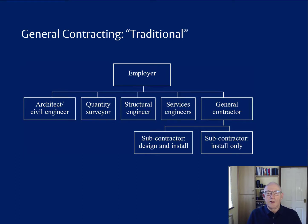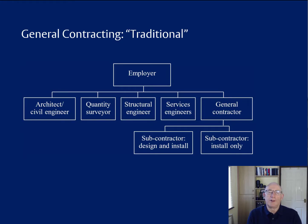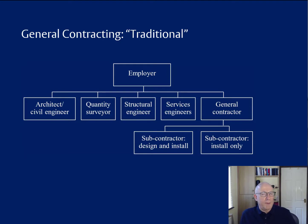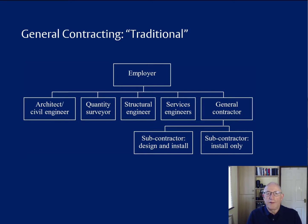An ambitious contractor called Thomas Cubitt in 1830 decided to make an offer: give us the design information and we'll do the rest. So they relieved the architect of the obligation of coordinating all of the different trade contractors on site, and the general contractor was born. In general contracting, we expect design information to be prepared by a design team who are independent of the contractor. For purposes of contracts in the UK, we use the word employer to refer to the organisation that is paying the contractor.